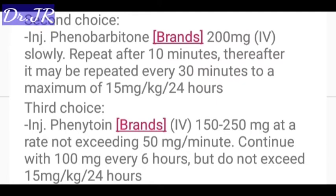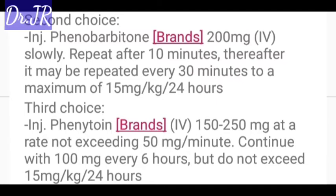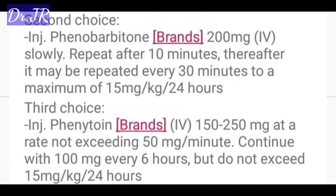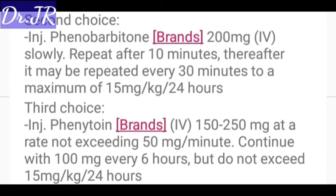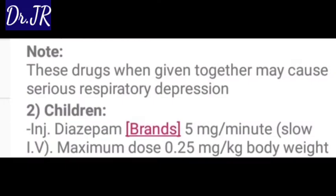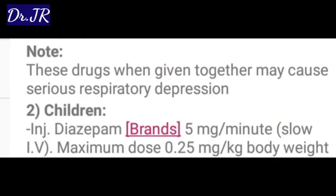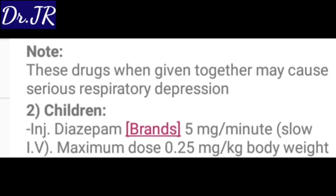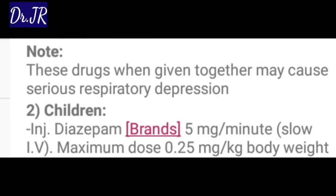Third choice: Injection phenobarbitone IV 150 to 250 mg at a rate not exceeding 50 mg per minute. Continue with 100 mg every 6 hours, but do not exceed 15 mg per kg per 24 hours. Note: these drugs when given together may cause serious respiratory depression. For children, injection diazepam 5 mg per minute slow IV, maximum dose 0.25 mg per kg body weight.